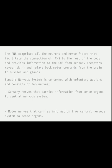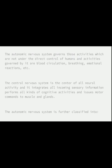The somatic nervous system is concerned with voluntary actions and consists of two nerves: sensory and motor. The sensory nerve carries information to the central nervous system from the sense organs. The autonomic nervous system governs activities not under direct human control, such as blood circulation, breathing, and emotional reactions.